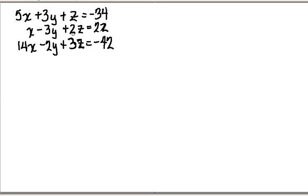This video will demonstrate how to solve a system of equations in three variables. The first thing I'm going to do is pick two of my equations and eliminate one of my variables. In this case I'm going to pick my first two equations and eliminate the z variable.